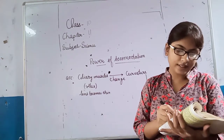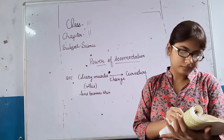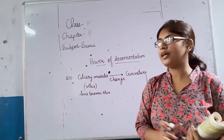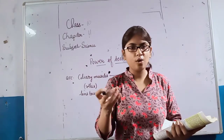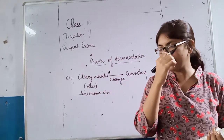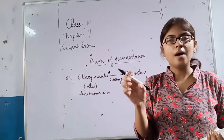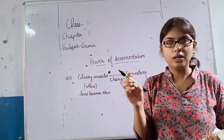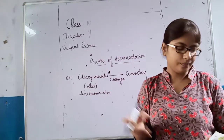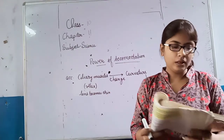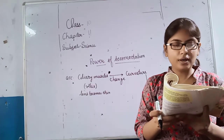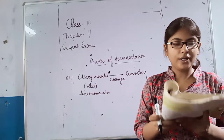Class, please underline this sentence. When you look at a near object, the ciliary muscles contract, our focal length decreases, and the eye lens becomes thick. The ability of the eye lens to adjust its focal length is called accommodation.